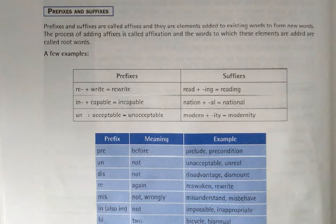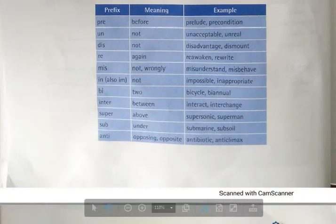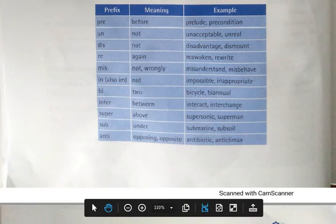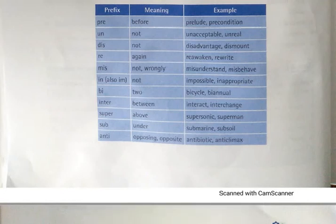So now here we have a table where we have prefix, their meaning with examples. So pre means before, prelude, precondition. Un means not, dis means not, re means again, mis means not or wrongly.